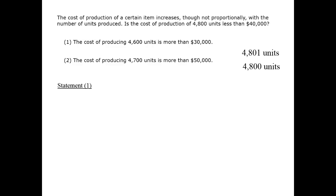Statement 1 tells us the cost of 4,600 units. 4,800 units is a greater number of units, so it will cost more, but we don't know how much more. So statement 1 tells us that the cost of 4,800 units will be more than $30,000. That means that it could be below $40,000 or above $40,000.